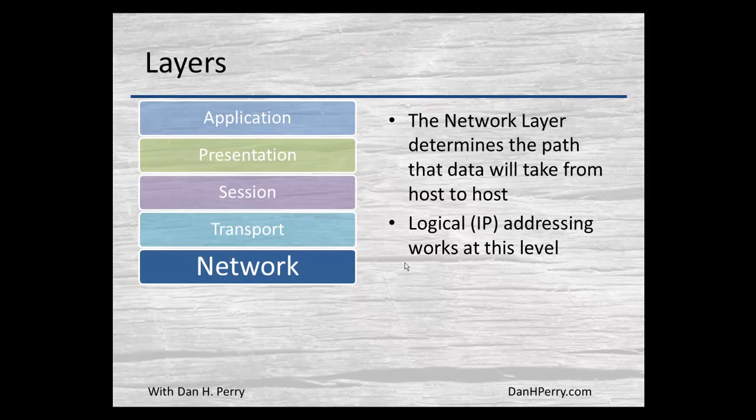The network layer is where we look at our path determination, how we get data from one location to another. This is our IP addressing area. This is where our network addresses reside or work. This is the layer that routers use to determine the best path to get data from one network to another.